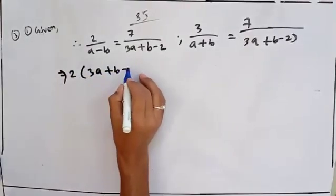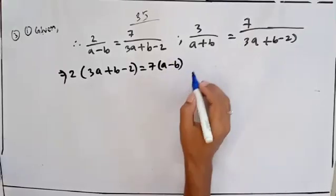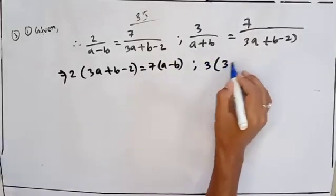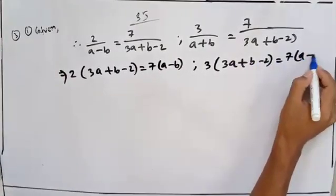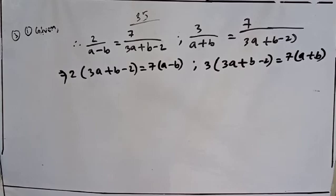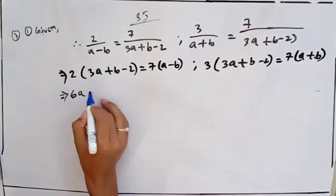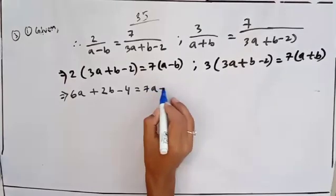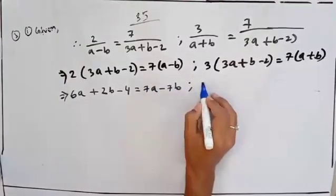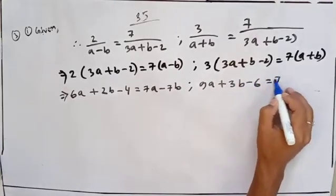By cross multiplication: 3(a plus b minus 2) equal to 7(a minus b), and 3(a plus b minus 2) equal to 7 into (a plus b). This implies: 6a plus 2b minus 4 equal to 7a minus 7b.